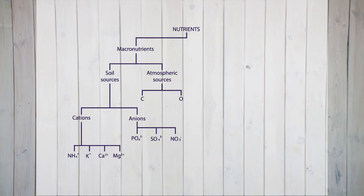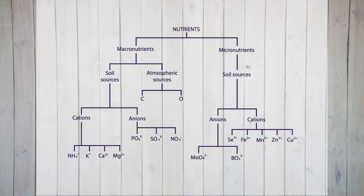However, they are not the only essential components for plant growth, as was discovered about 60 years later, in the early 20th century, when the first micronutrients were discovered. Micronutrients or trace elements that are necessary for plant growth and health include boron, manganese, iron, zinc, copper, molybdenum and selenium.